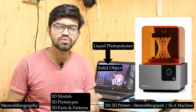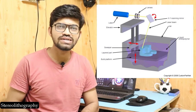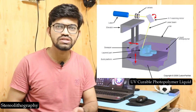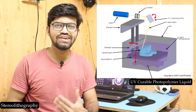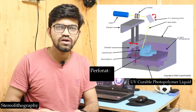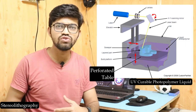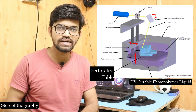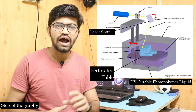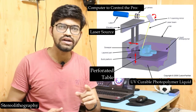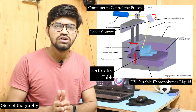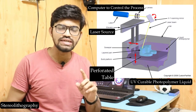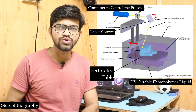Let us understand the actual process of stereolithography and how parts are manufactured using it. There are four important components: the UV-curable photopolymer resin filled in liquid form inside a tank; a perforated table with a provision to move vertically up and down inside the tank; a UV laser source; and a computer which controls the movement of the laser arm and the perforated table.